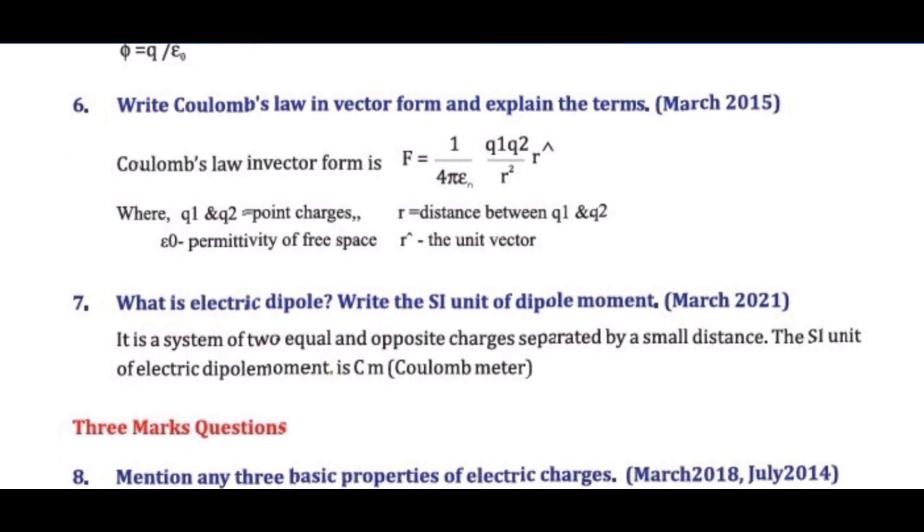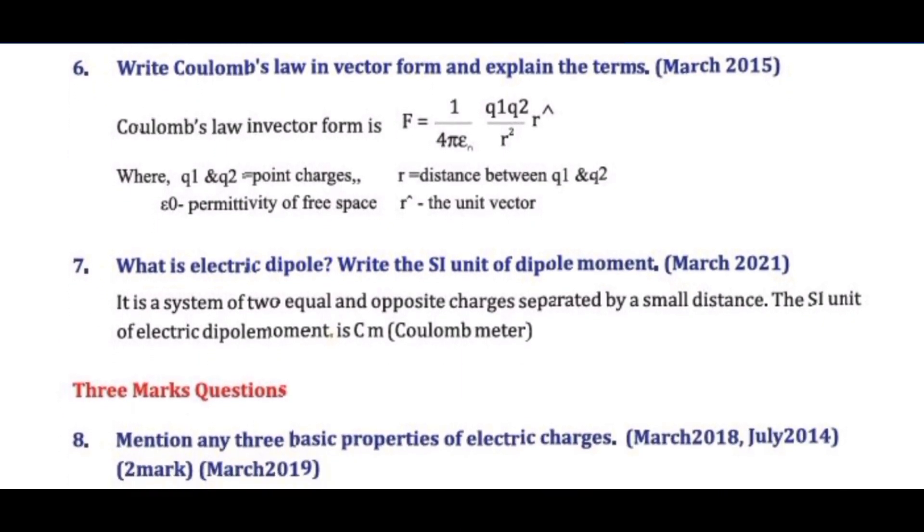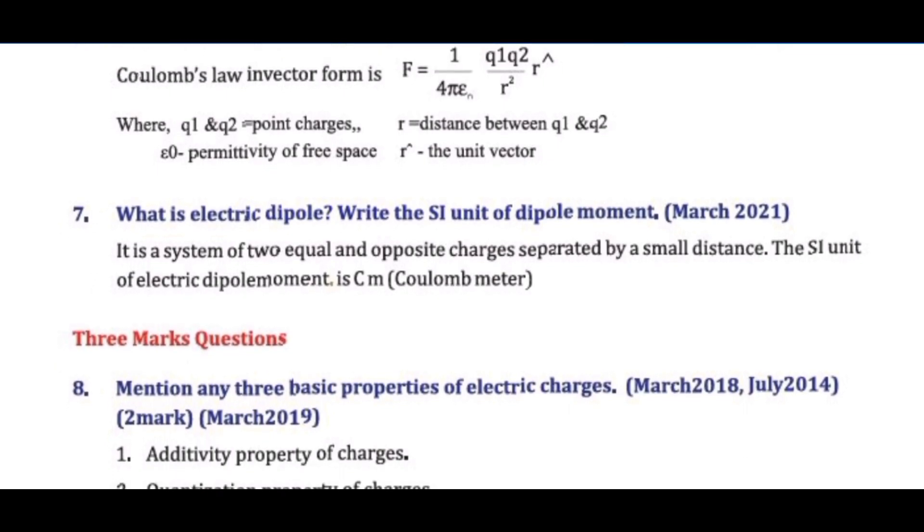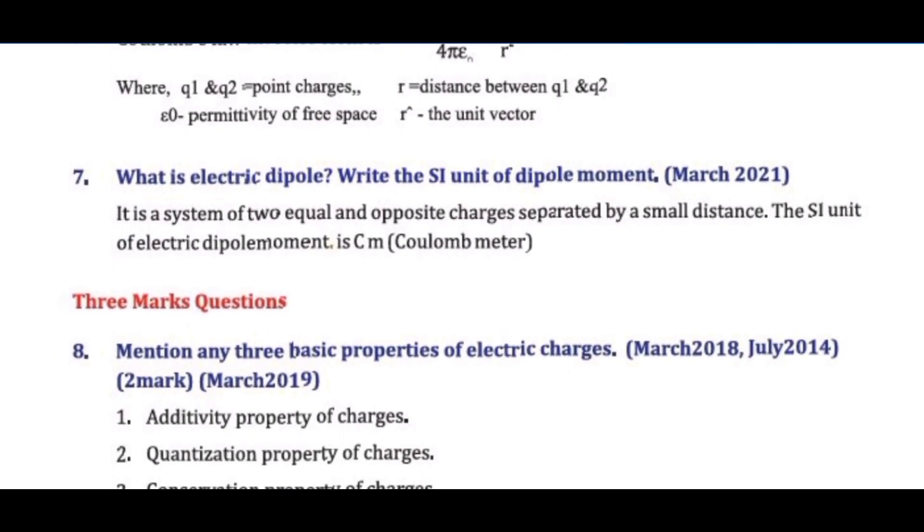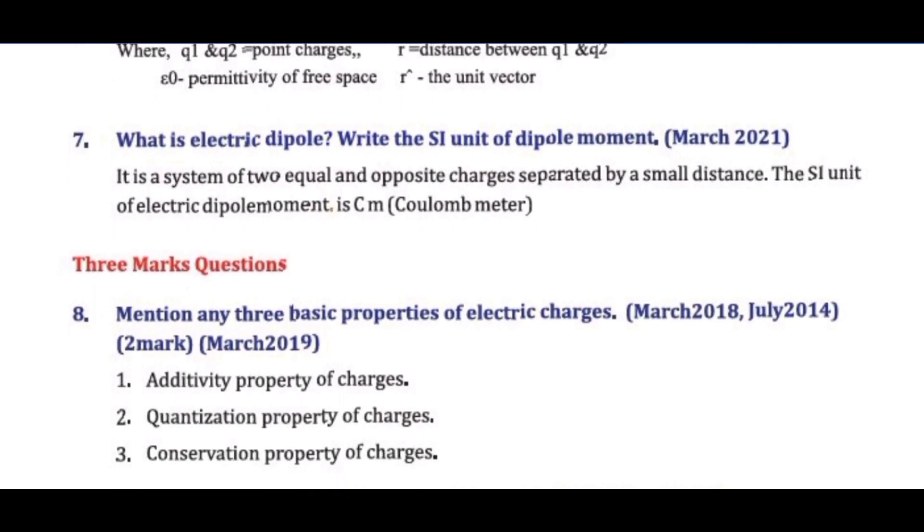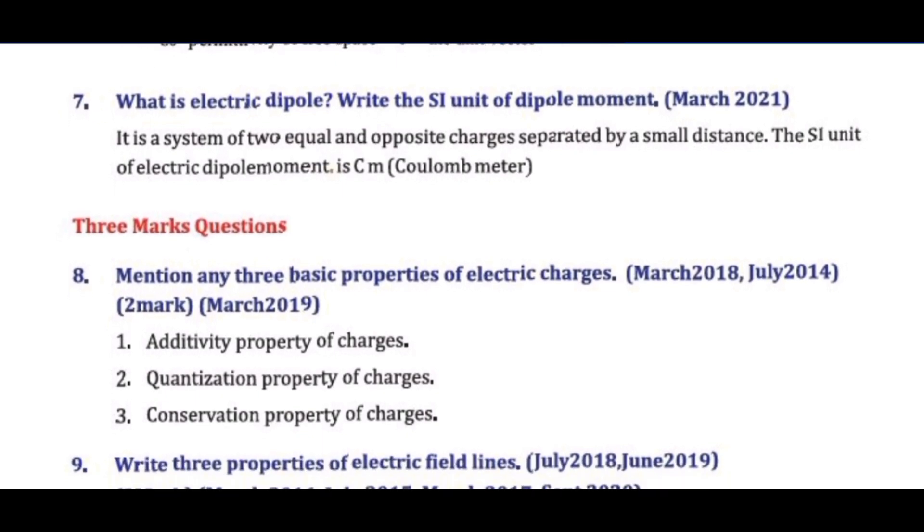Question 7: What is electric dipole? Write the SI unit of dipole moment. Answer: It is a system of two equal and opposite charges separated by a small distance. The SI unit of electric dipole moment is coulomb meter.